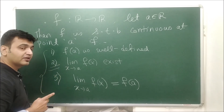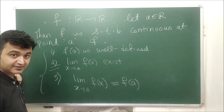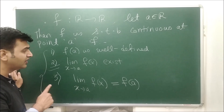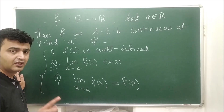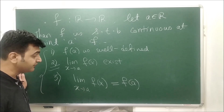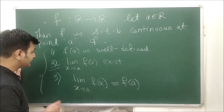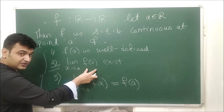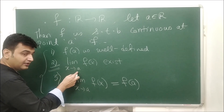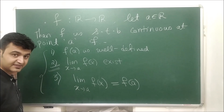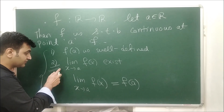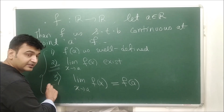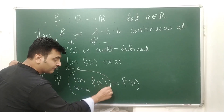The second condition is that when you take the limit of the function, that limit should exist. I've already made a short video about the limit of a function — you can see the link in the description. So when you approach 'a', the limiting value of the function should exist. But this is not sufficient; we need one more condition.